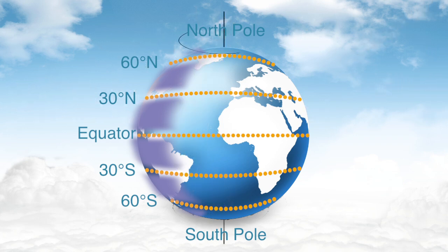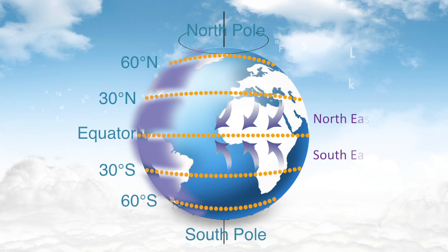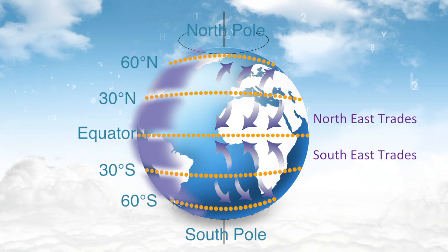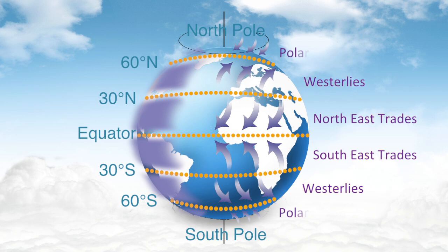These are also affected by the spin of the Earth. In the northern hemisphere, near the equator, winds come from the northeast, and are called the Northeast Trades. Halfway between the equator and the North Pole, winds come out of the west, and are called the Westerlies. Near the North Pole, winds come out of the east again, and are called the Polar Easterlies.